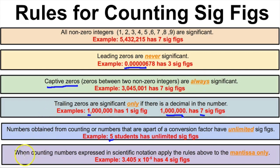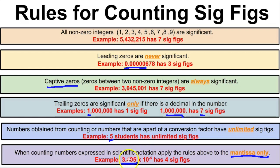Rule six: when counting numbers expressed in scientific notation, apply the rules above to the mantissa only. For example, in a number expressed in scientific notation, the mantissa is the coefficient portion. Applying the rules: we have a one, a captive zero for two, and two non-zero integers, giving us four sig figs in this number.